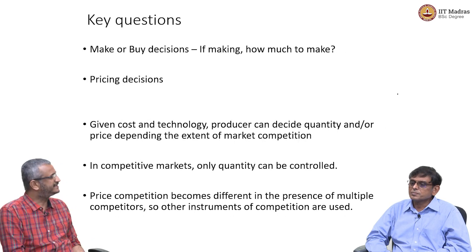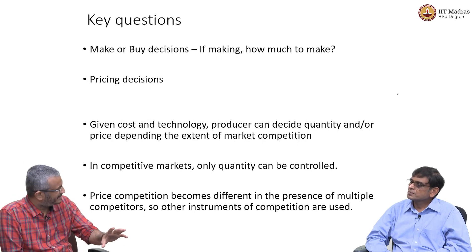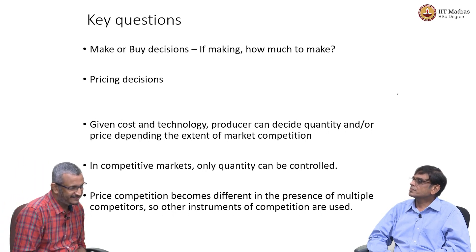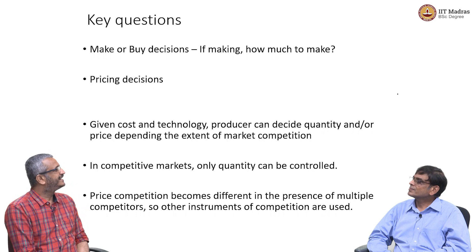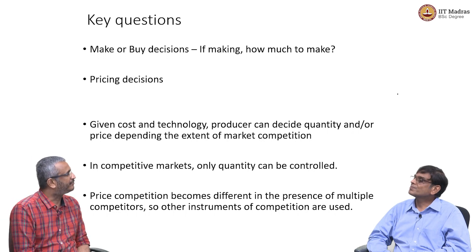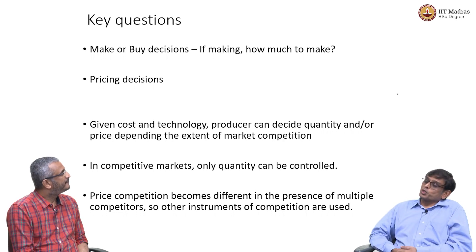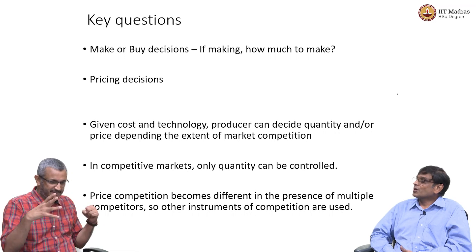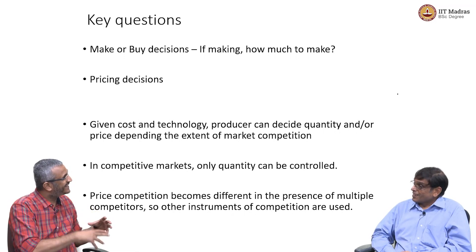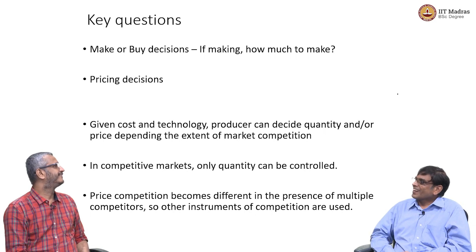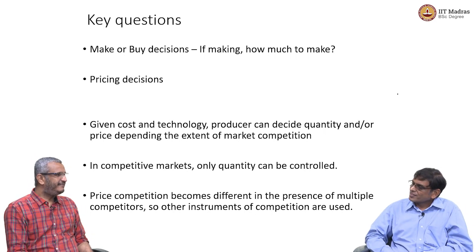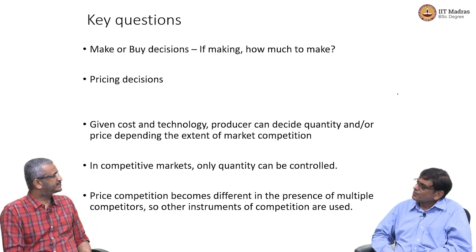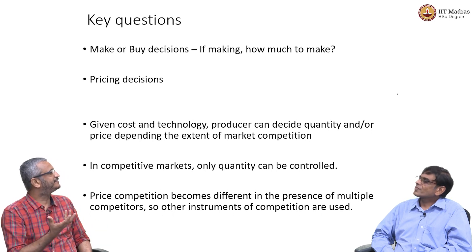This very simple analysis leads us to very important questions about the firm. First, what we started off with in the beginning: a firm will have to decide whether it should make or buy — whether it should produce something or buy from somebody. If you buy from somebody, you do not need to invest in capital. If you have to make it, then you need the capital. In a way, we can say that the entire discussion and debate about outsourcing is an offshoot of this make-or-buy decision.